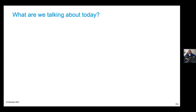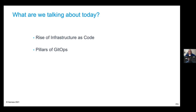So what are we going to be talking about today? If the title didn't give it away, we'll be talking a lot about GitOps. We're going to start talking about the rise of infrastructure as code — IaC — as the precursor to GitOps, and some challenges with it. Then hello GitOps for your application infrastructure, the pillars of GitOps from Weaveworks — one of the godfathers of GitOps — and supercharging your GitOps journey, including the tooling landscape and pitfalls to watch out for.